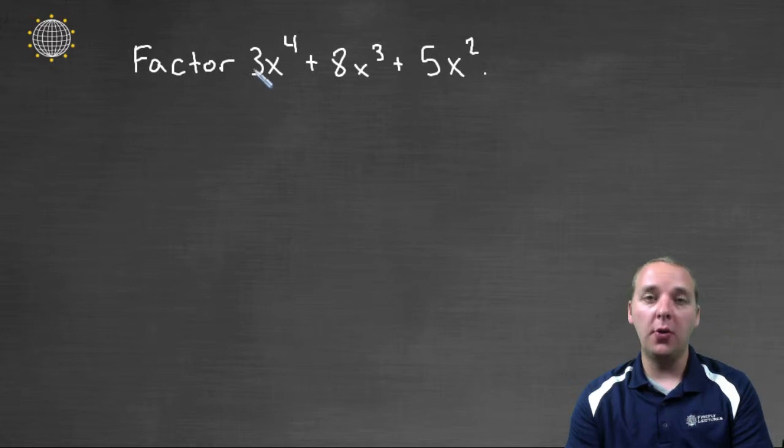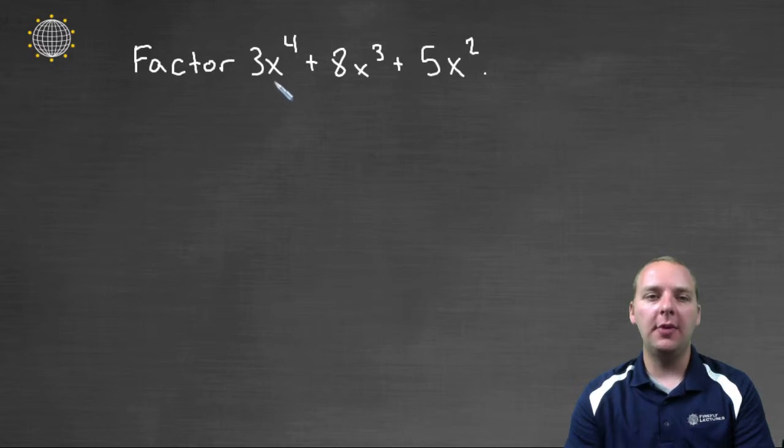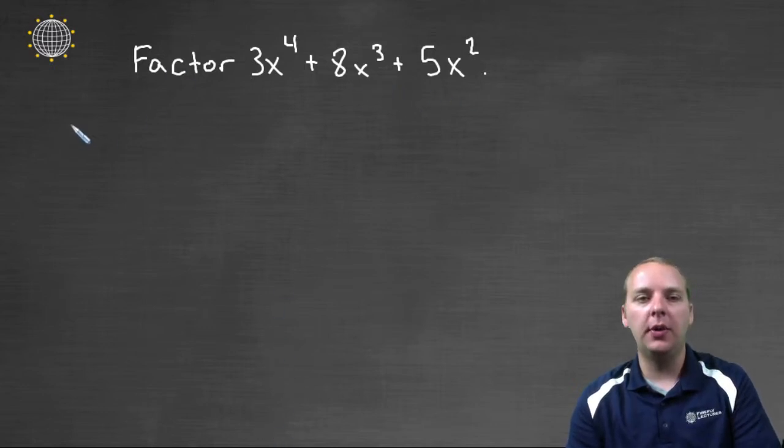And so there's the coefficients of 3 and 8 and 5, there's nothing really common with the coefficients, but we have an x to the fourth in the first term, then an x cubed, then an x squared. So I do have a common factor of x squared that can be pulled out of these three.